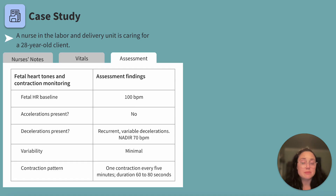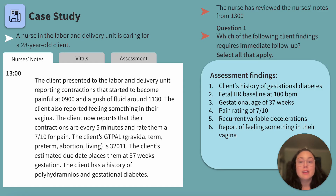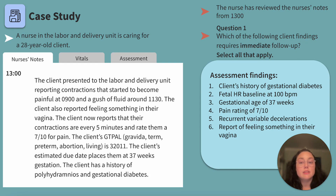How are we feeling about the assessment? Something is occurring — let's dig deeper. We have our first question: which of the following client findings requires immediate follow-up? Select all that apply: the client's history of gestational diabetes, fetal heart rate baseline at 100 beats per minute, gestational age of 37 weeks, pain rating of 7 out of 10, recurrent variable decelerations, and report of feeling something in their vagina. Take a moment to pause and answer.